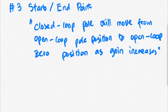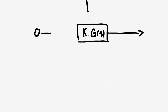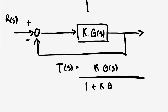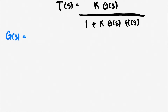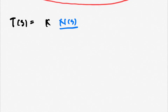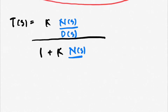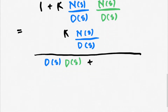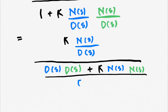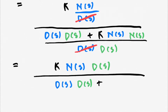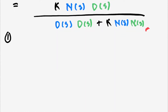This is how we mathematically prove this criterion. From the block diagram, we have a closed-loop system of k times G(s) as the plant. The transfer function becomes k times G(s) divided by 1 plus k times G(s) times H(s). With G(s) equal to N(s) over D(s) and H(s) similarly defined, this simplifies to k times N(s) times D(s) divided by D(s) times D(s) plus k times N(s) times N(s).